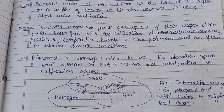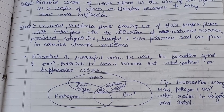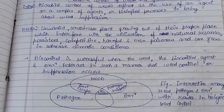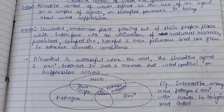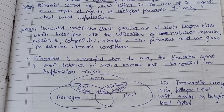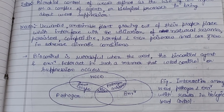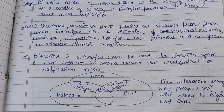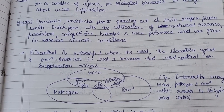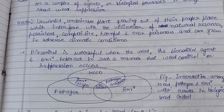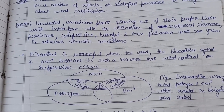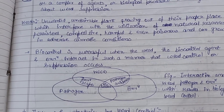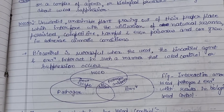Weeds are not required in the area where they grow and interfere with the utilization of natural resources. For example, a weed species growing in a particular area may utilize ground water so much that it affects nearby plants and harms the soil. Weeds are persistent, competitive, harmful, even poisonous, and can grow in adverse climatic conditions due to their adaptability to harsh environments.